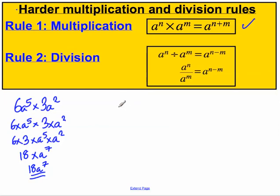Now we can do a division as well. Imagine we were doing 6a to the power of 5 divided by 3a to the power of 2. What we can do simply and quickly here is divide the numbers first. 6 divided by 3 is 2, a to the 5 divided by a squared, we can use the division rule. That's a to the 5 subtract 2 which is a to the power of 3.